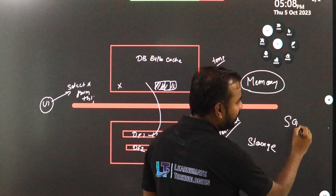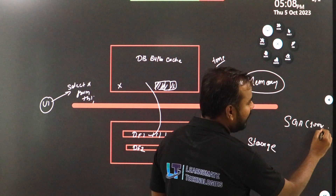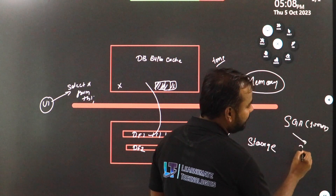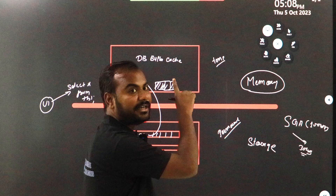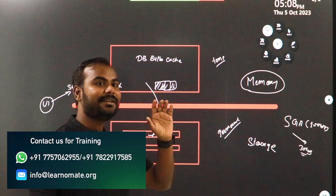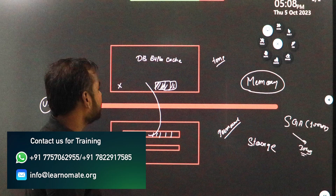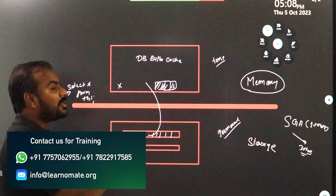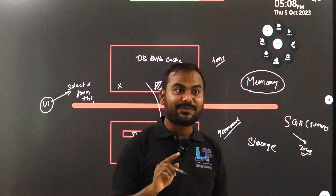Let's say my SGA is of size 100 GB, and among that maybe you have allocated 30 GB to the database buffer cache. That means it can hold only 30 GB of data. But if the database buffer cache becomes full, then what will happen? That's the question.